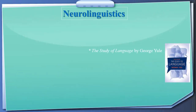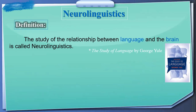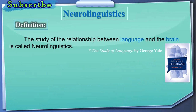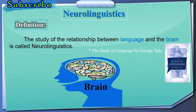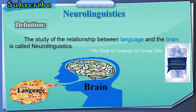Here we are going to talk about the definition from the book 'The Study of Language' by George Yule. According to this book, the study of the relationship between language and the brain is called Neurolinguistics. When we talk about Neurolinguistics, we are concerned with the brain and language — specifically the physical properties of the brain and how it controls language while we speak.